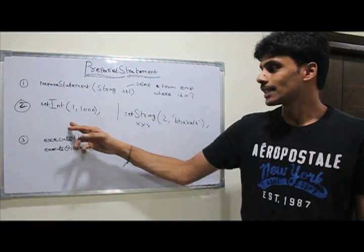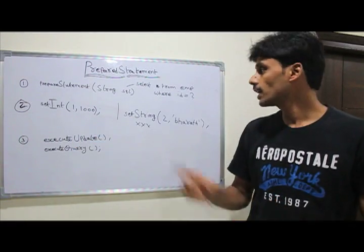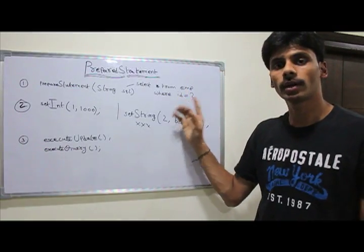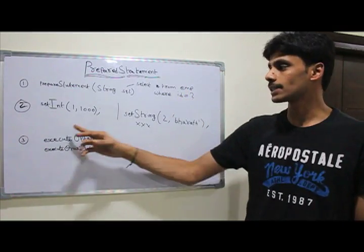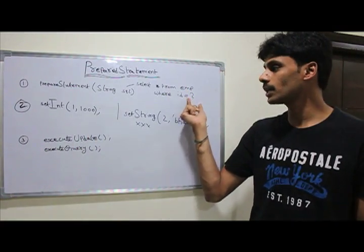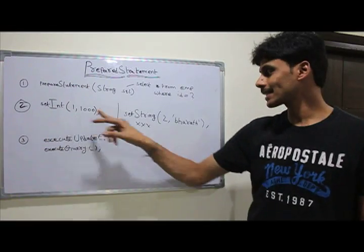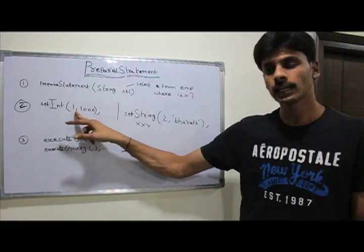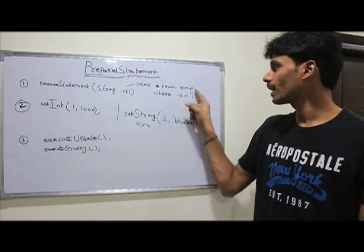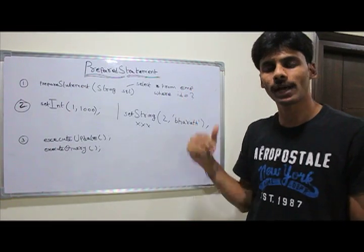Then the second step is to bind the parameters. So here we use question marks, we will not pass the actual parameters, but in the second step, we can bind those parameters using the setXXX methods, which could be setInt, setString, setFloat, etc., depending on the type of parameter you want to pass in.